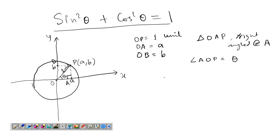So to find the sinθ we will get the perpendicular upon hypotenuse. Here perpendicular is OB and hypotenuse is OP. This length is the perpendicular and OP is the hypotenuse.